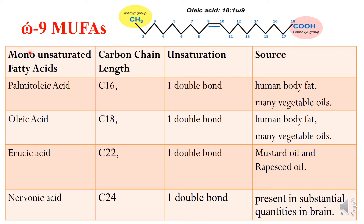The examples include palmitoleic acid, which has a 16-carbon chain length. The first double bond occurs at the ninth position from the methyl end, and the common sources are human body fat and many vegetable oils. Oleic acid is a C18 carbon chain length and also has one double bond, found in human body fat and many vegetable oils.